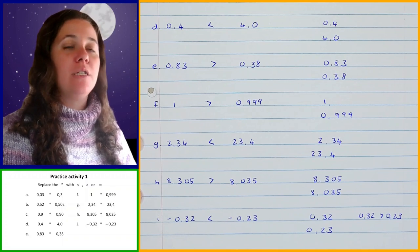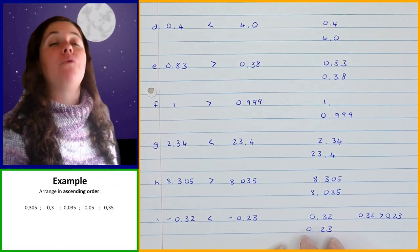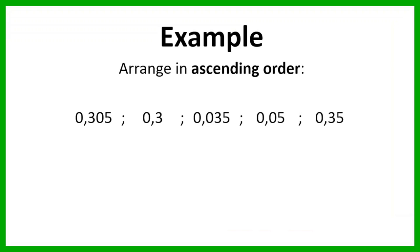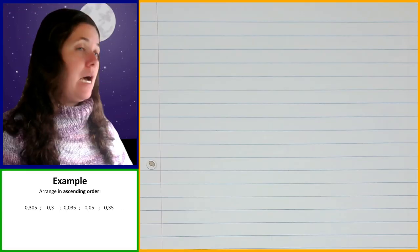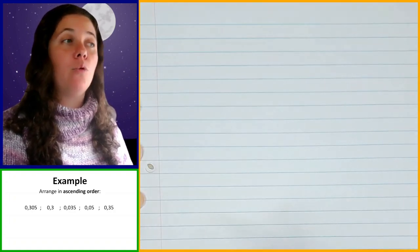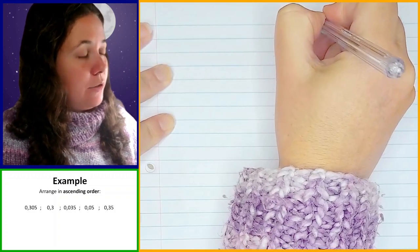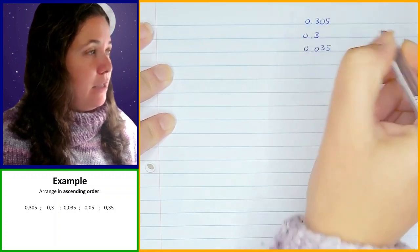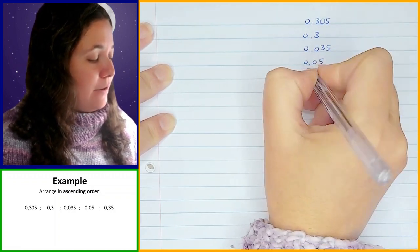Okay, so now we're going to compare decimal fractions where we are arranging them in ascending order. Let's have a look at this first example. Here we've got the fractions 0.305, 0.3, 0.035, 0.05, and 0.35, and we need to arrange these in ascending order. In order to do that we first have to know how they compare to each other in terms of their sizes. So I'm going to write them underneath each other so I can compare them more easily by looking at their place values.